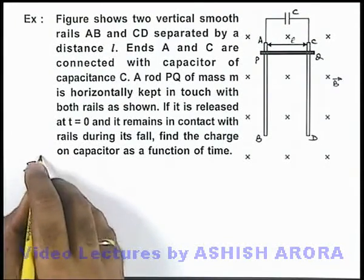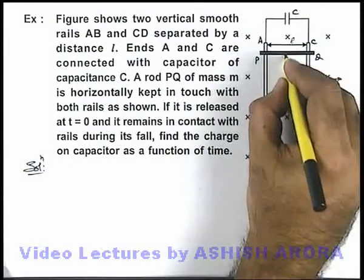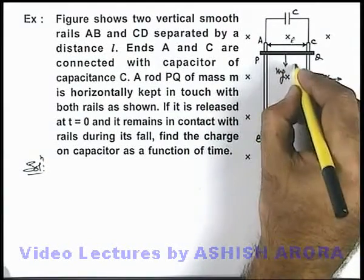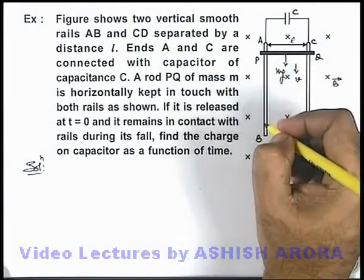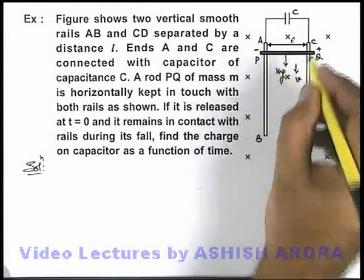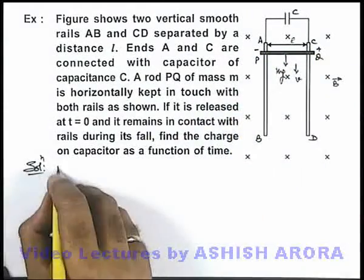Now in this situation, we can see on releasing, due to its weight mg, the rod will start falling. When it attains a speed v, across terminals P and Q a motional EMF is induced and we can directly write.